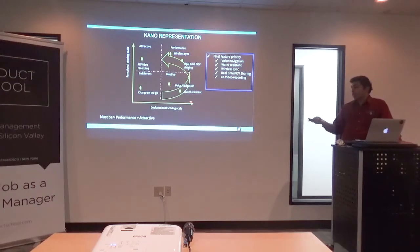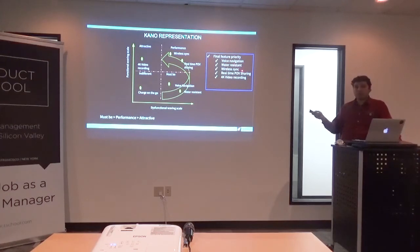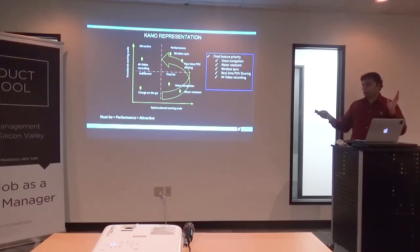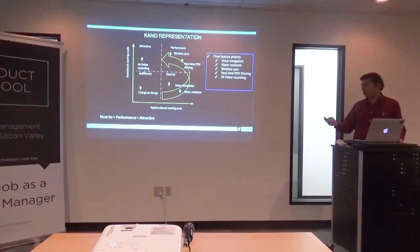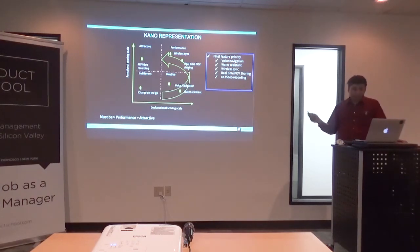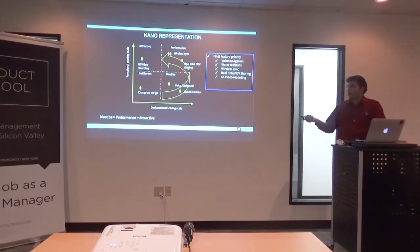This is the final feature priority you end up with. There is no use shipping the product without the must-have, which is voice navigation — so that goes first, with all engineering effort devoted to it. Then water resistance. Then you start building the performance tier: wireless sync and real-time POV share. Then you get to the 300cc motorcycle equivalent — going back to the motorcycle analogy.